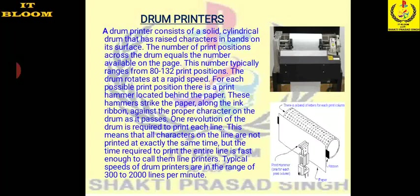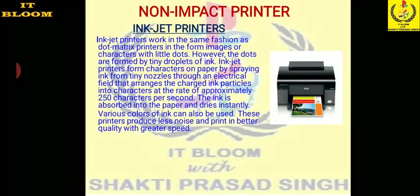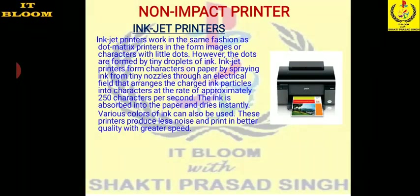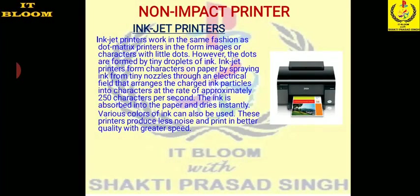The next category is non-impact printers. As stated, non-impact printers do not touch the paper with a head; instead, they spread the ink onto the paper. The first one in this category is the inkjet printer. Inkjet printers work in a similar fashion to dot matrix printers, forming images or characters with tiny dots.